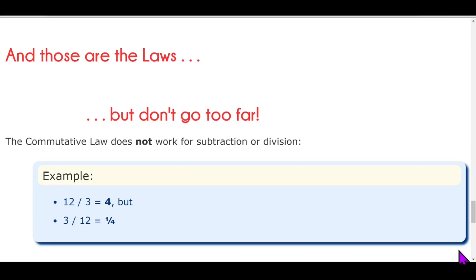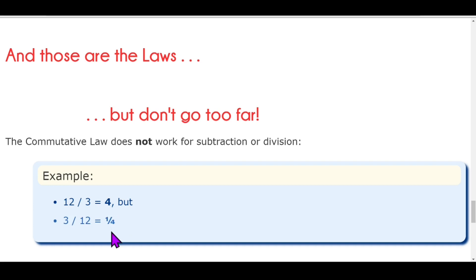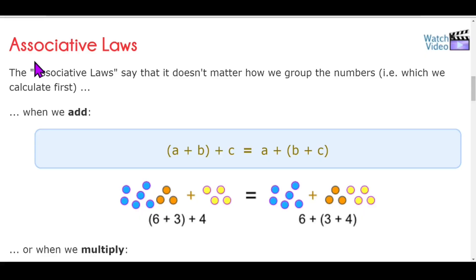There is a limitation for the commutative law: this law is not applicable on subtraction and division. For example, twelve divided by three equals four, but three divided by twelve equals one-fourth — four is not equal to one-fourth. Similarly, twelve minus three is not equal to three minus twelve. That's why commutative law is not applicable on subtraction and division.